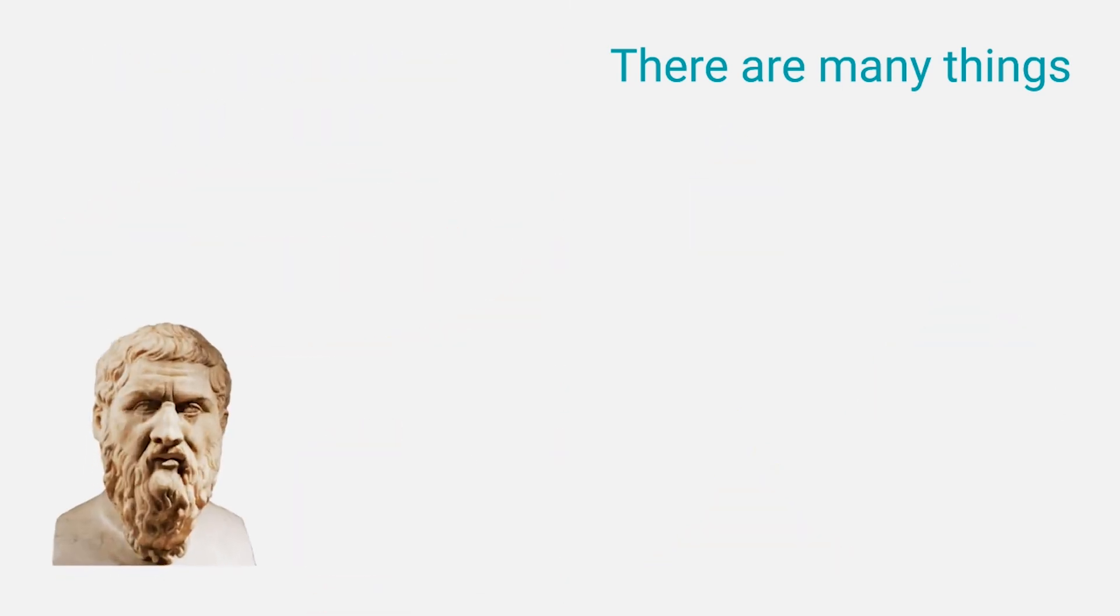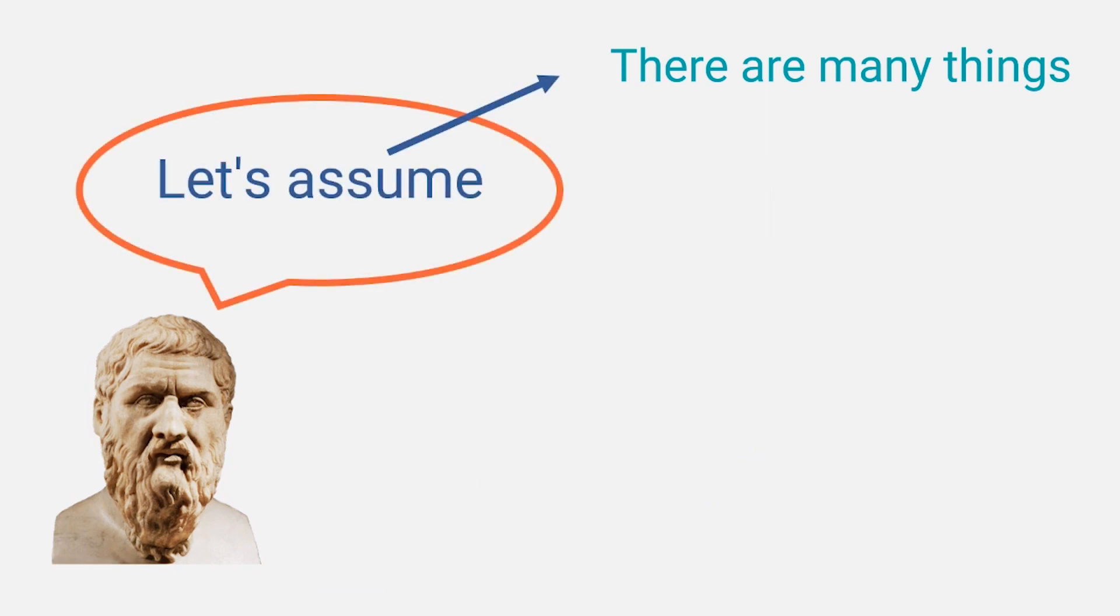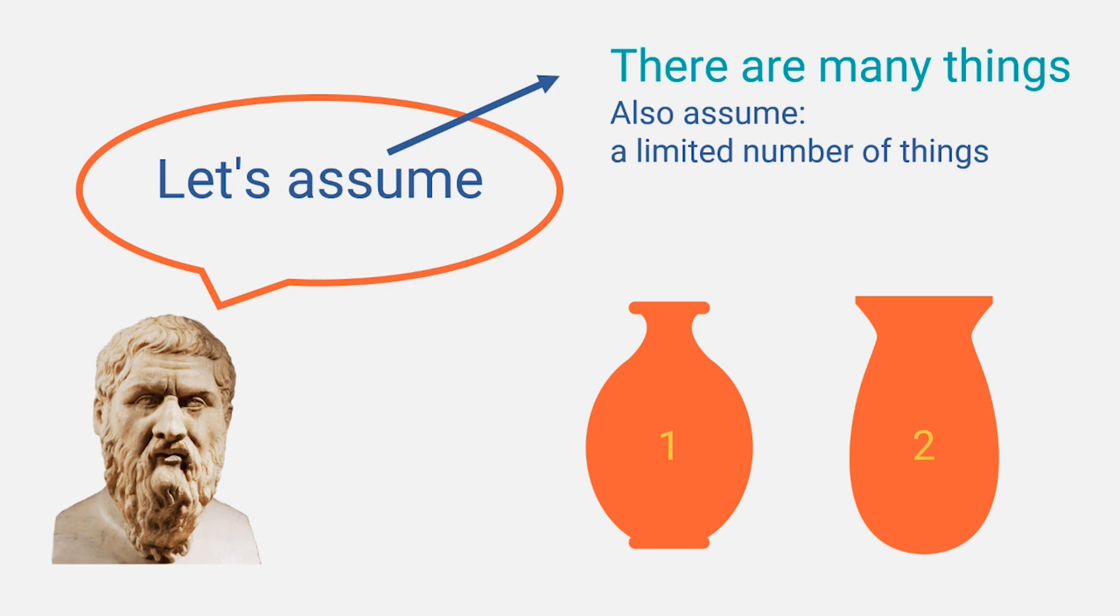So he assumes that there are many things. But, if there are many things, there is still a limited number of them. So now we take two of those things. Okay, so how are these two things different? There must be something between them to keep them separate. Because, if there is nothing between those two things, they would be stuck together and be one object. But now there are two. So there must be a third thing in between those two objects to keep them separate.